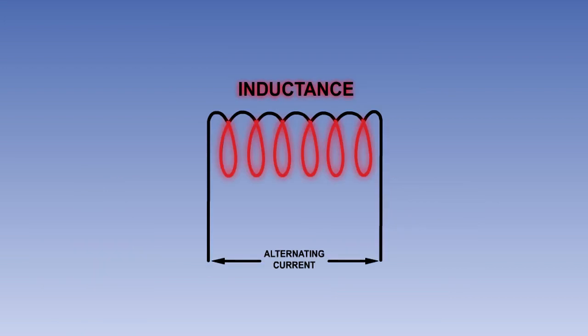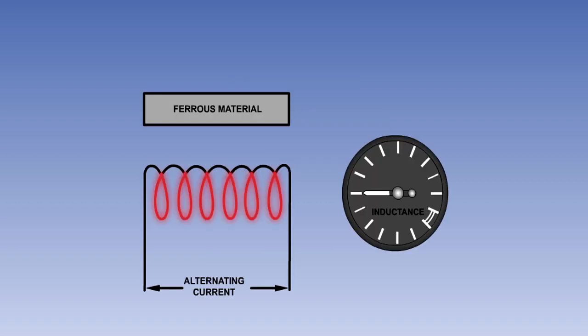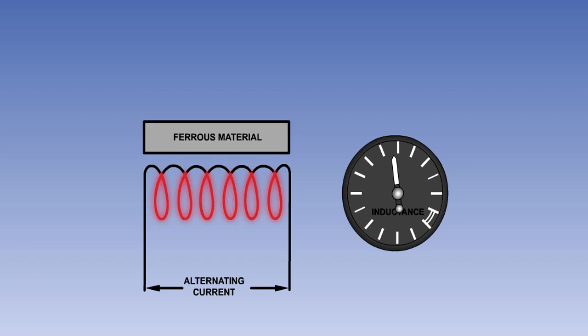The first type of proximity sensor that we are going to look at is the inductive type. Inductance is a property that a coil has when it has an alternating current or AC pass through it. Inductance is fully explained in the AC part of the syllabus. For the moment, all you need to know is that the inductance of a coil with AC passing through it changes when it is brought into close proximity to a suitable ferrous material, and that this change can be measured.